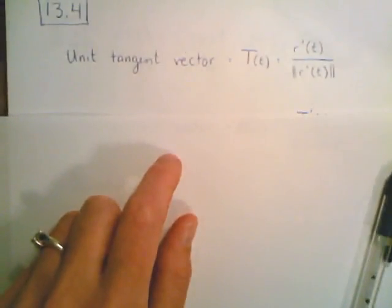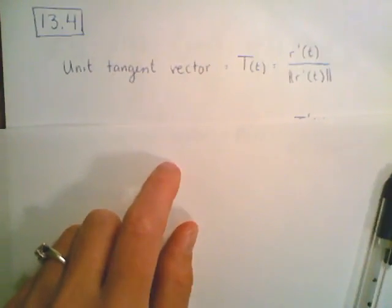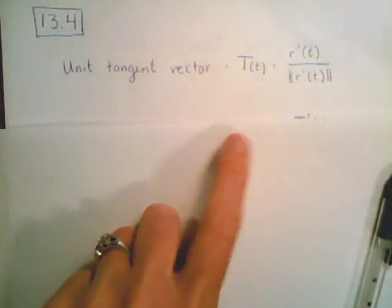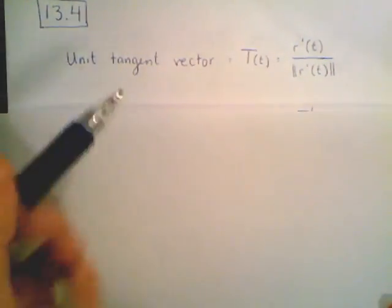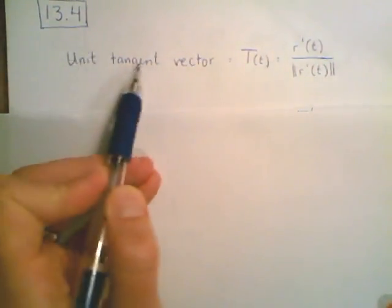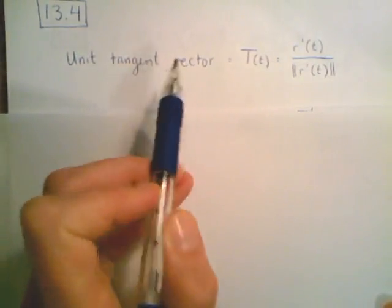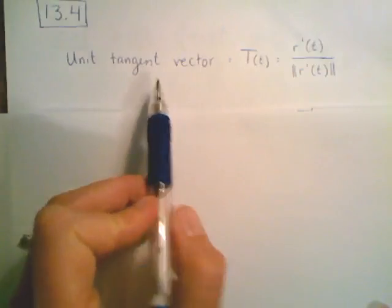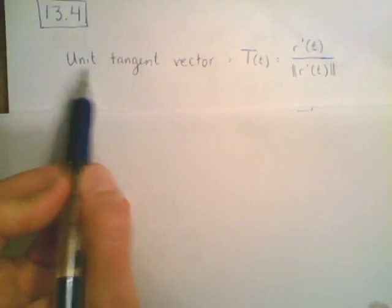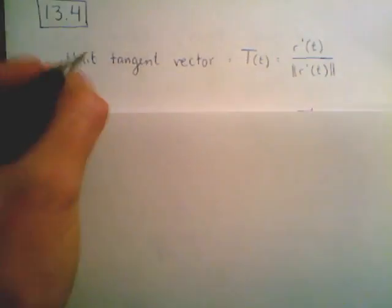We're going to take a look at section 13.4, which has just a couple of definitions to work through. The first definition is that of a unit tangent vector. A unit tangent vector is a vector that is tangent to the curve, and when it says unit, that means it is exactly one unit in length.